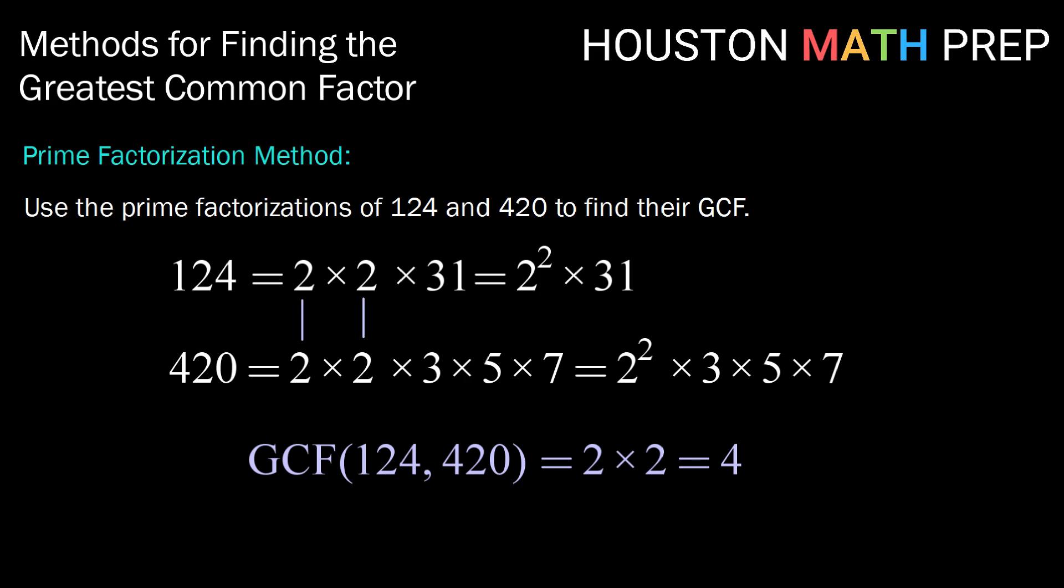So in this case, the GCF of 124 and 420 share the divisors 2 and 2. Therefore, our greatest common factor is 4.